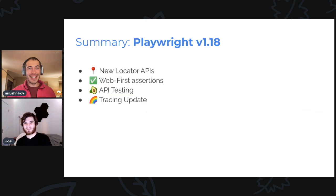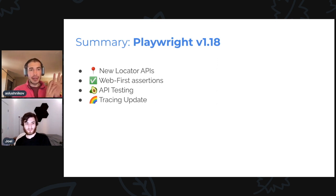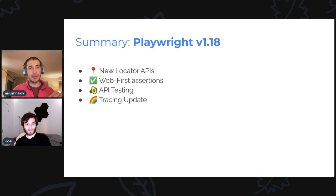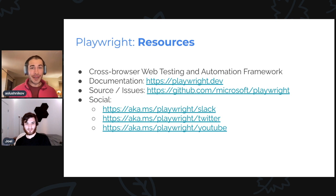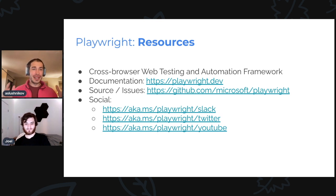So those were our language updates, and this is all the new stuff for Playwright 1.18. Quick recap — four things: the new hasText option for Locators, very handy, you'll probably use it daily; web-first assertions, API testing, and the tracing update, all coming to the full Playwright family of languages. Big release for languages. If you like what we do, we have a Slack channel — very active — a Twitter, please subscribe, and a YouTube channel. If you like what we do, please give us a star on GitHub. Thank you.